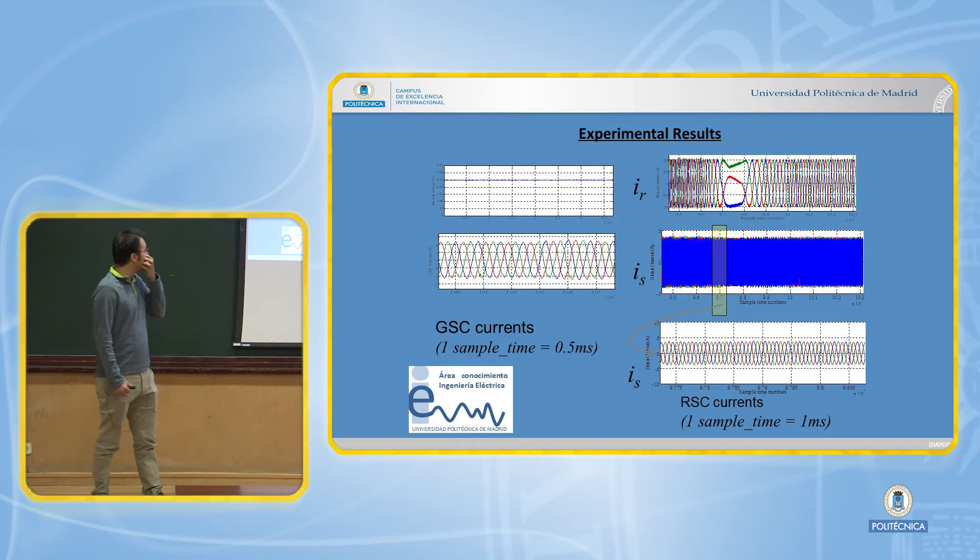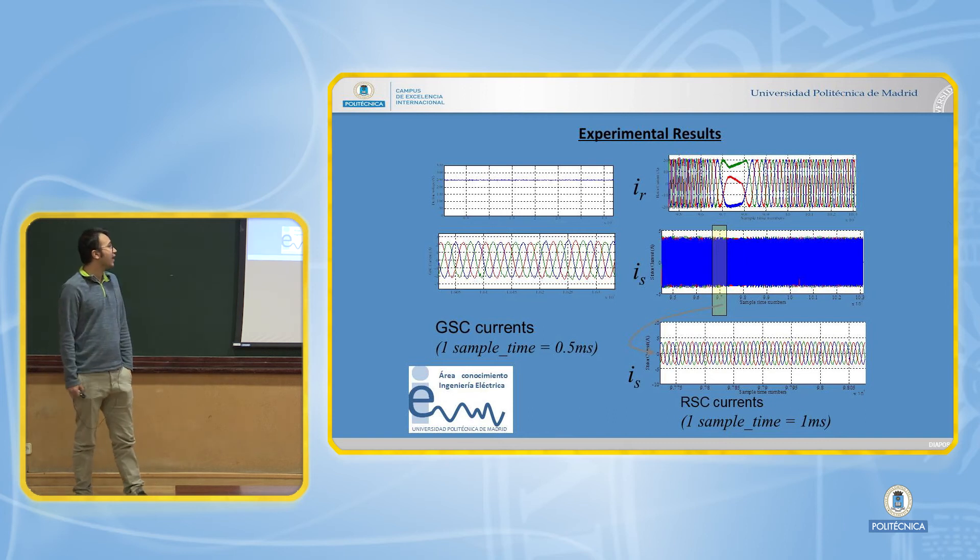The results are in here. We put the algorithm in a real system and we have the experimental results. We change the speed of the machines near the synchronous speed, above synchronous speed, and the results show that the current can be sinusoidal and work very well.